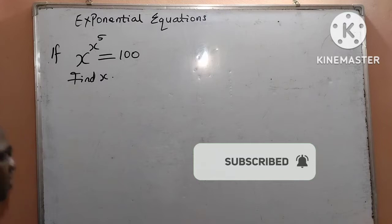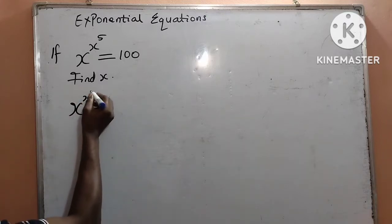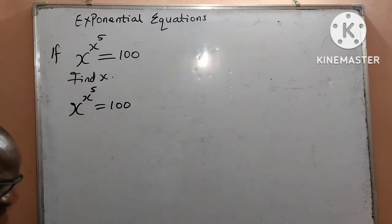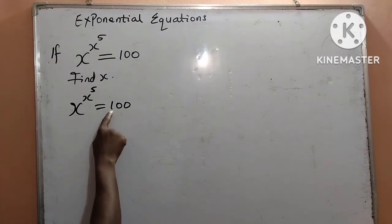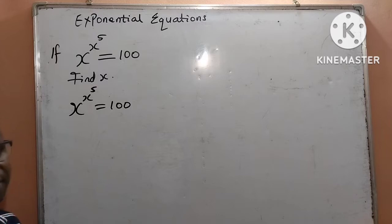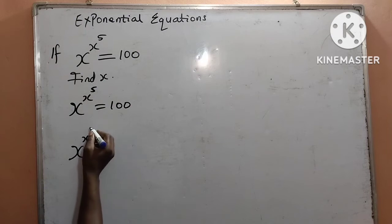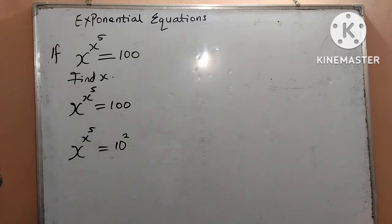The question we are given is to simplify x to the power of x to the power of 5, equal to 100. I want us to start from the right hand side. First and foremost, we will write this 100 in index form. That should be x to the power of x to the power of 5 is equal to 10 to the power of 2.